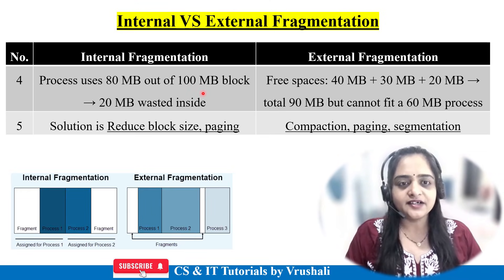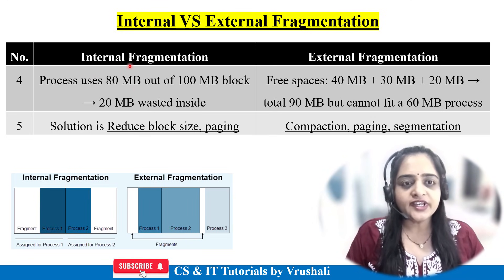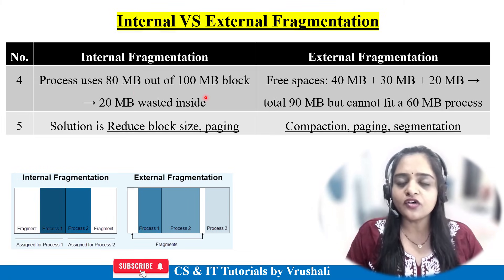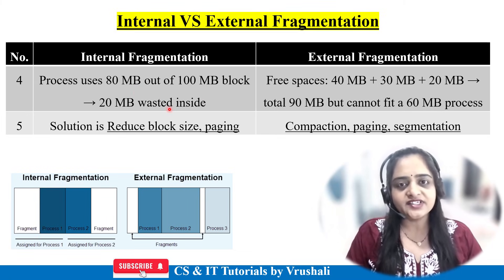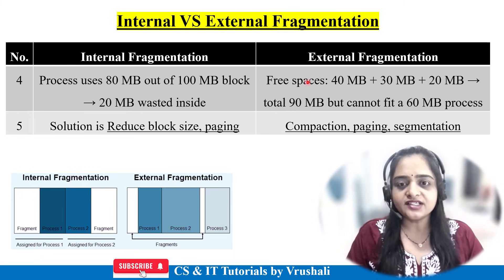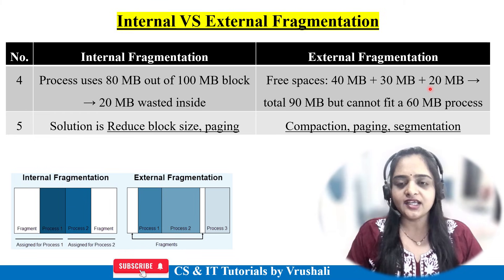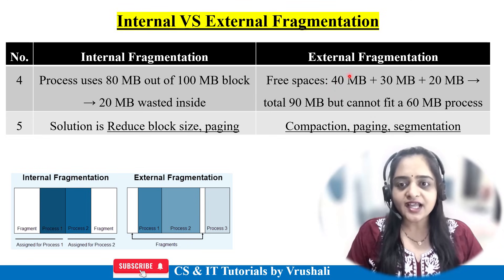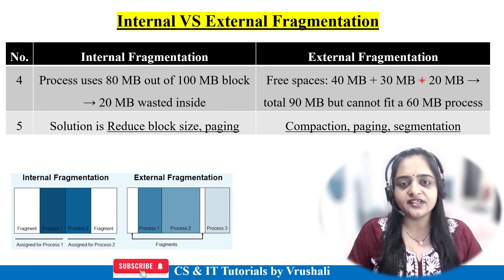Here is an example: in internal fragmentation, suppose a process uses 80MB out of 100MB — so 20MB is wasted inside. In external fragmentation, free spaces exist like 40MB, 30MB, 20MB — but a particular file requires 90MB of memory, so it can't fit because memory is scattered everywhere.